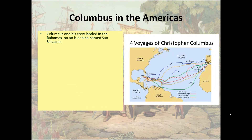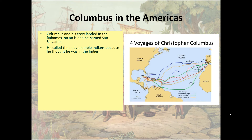Columbus and his crew landed in the Bahamas on an island he named San Salvador. He called the native people there Indians because he thought he was in the Indies. The problem with Columbus's voyage was that he severely underestimated the actual circumference of the earth — he believed the earth was much smaller than it was. Columbus was not trying to prove the earth was round; if you were educated in Europe at the time, it was well known that the earth was a globe. There were people who advised King Ferdinand and Queen Isabella not to fund his voyage because they believed his math was wrong and he would simply disappear into the great world ocean.